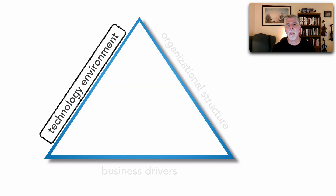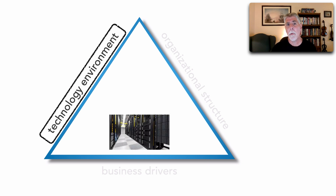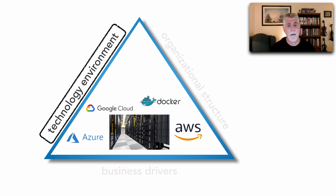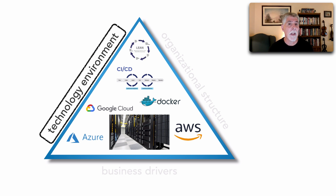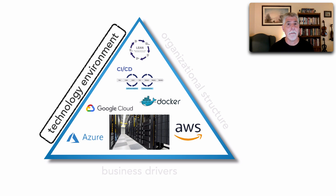If we take a look at the technology environment, the things that might change — which an architect should keep in tune with — include the deployment environment: is it on-prem or in the cloud? Are we using containerization? What about the CI/CD pipeline? Maybe there are major improvements made there, or even a change in methodology. Any of these changes can influence the type of architecture we use and whether that architecture is still valid.